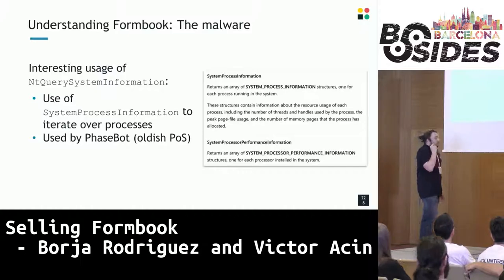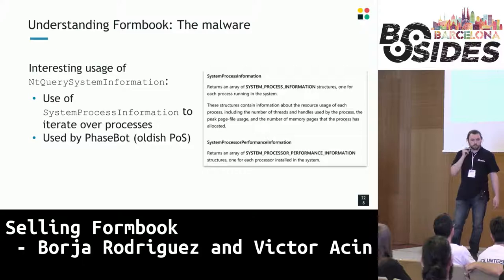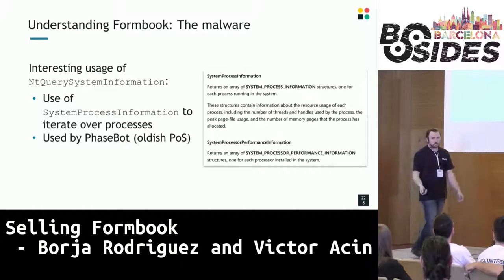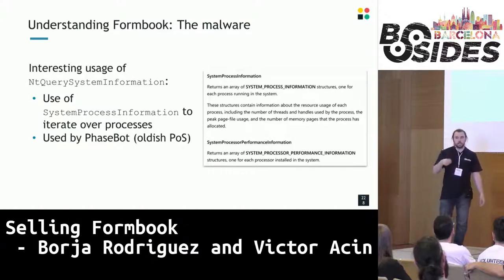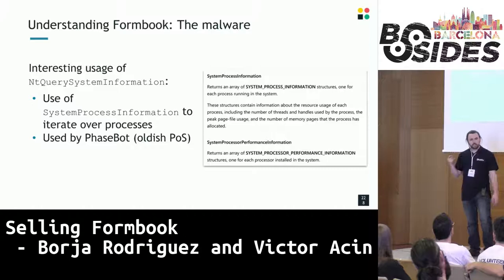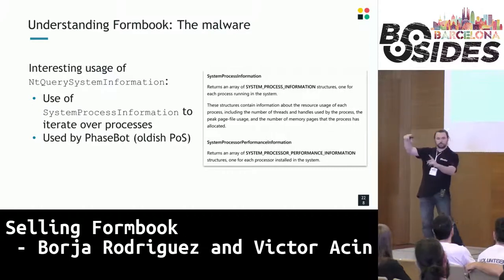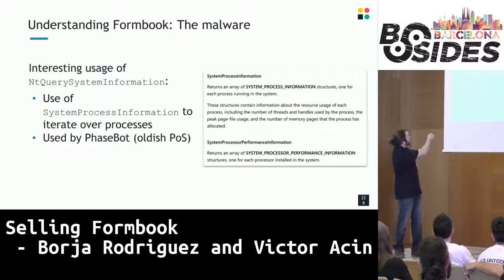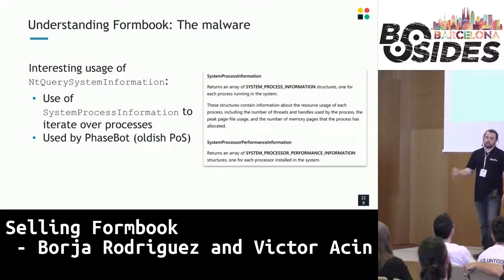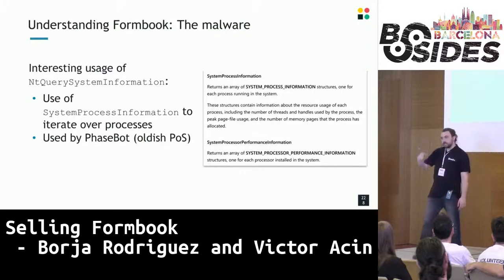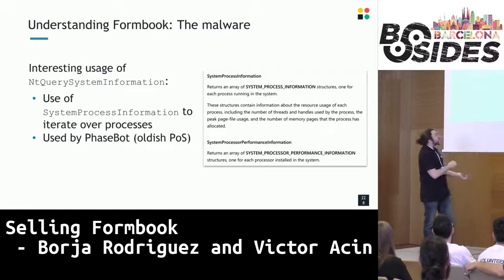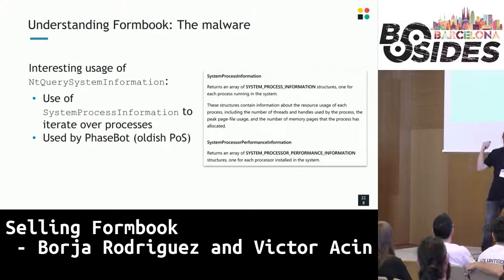When malware wants to iterate over running processes, you usually see it using CreateToolhelp32Snapshot. In this case, Formbook uses NtQuerySystemInformation with the flag SystemProcessInformation — flag 0x05 — which returns a similar structure but is way sneakier. When examining behavior, instead of seeing a call that clearly says 'I'm looking at all processes,' you just see something querying for information, and unless you know that 0x05 is the relevant flag, you're lost.